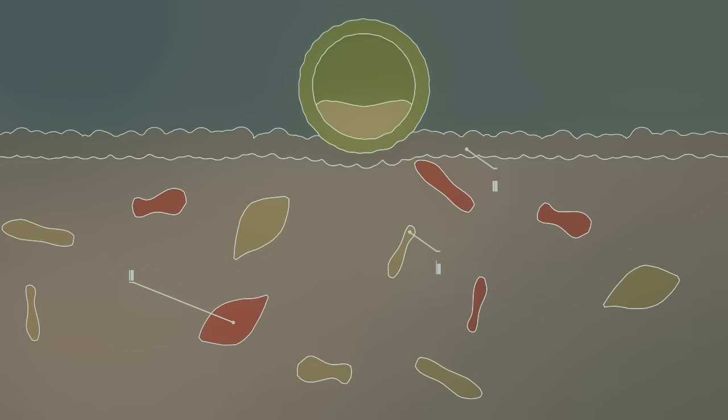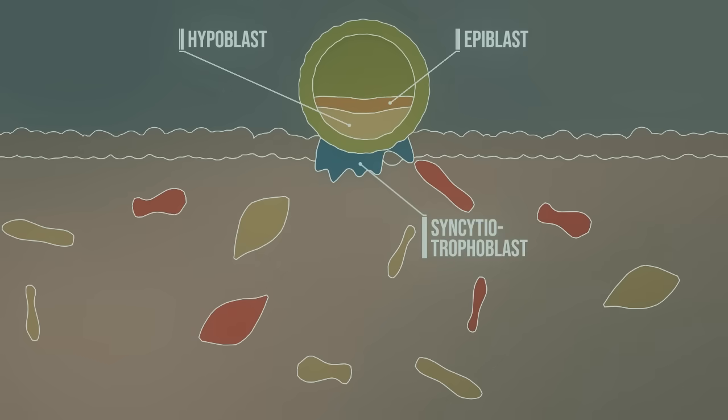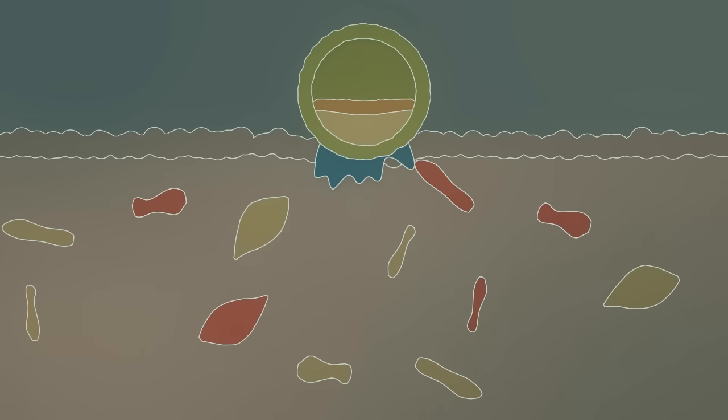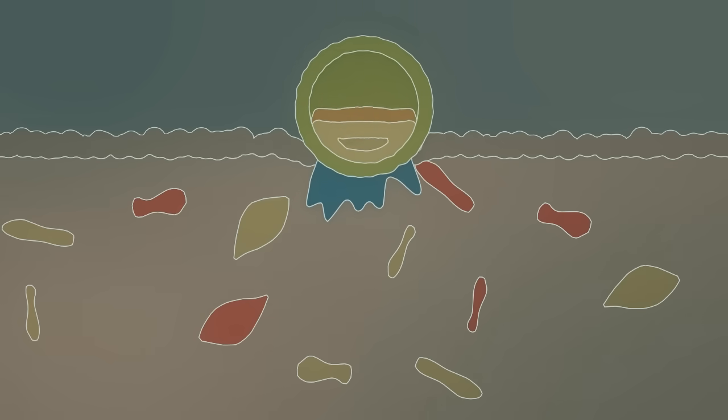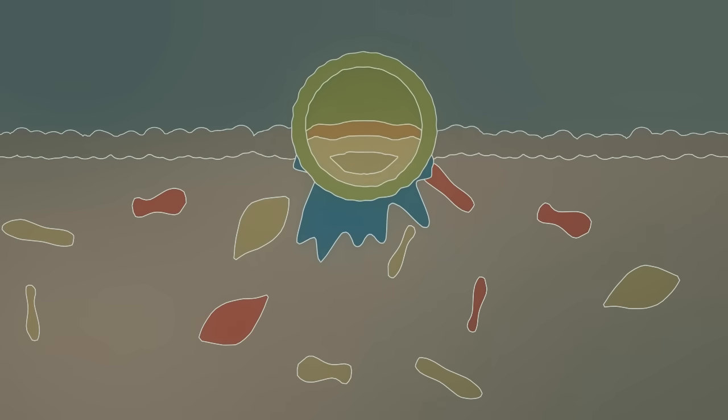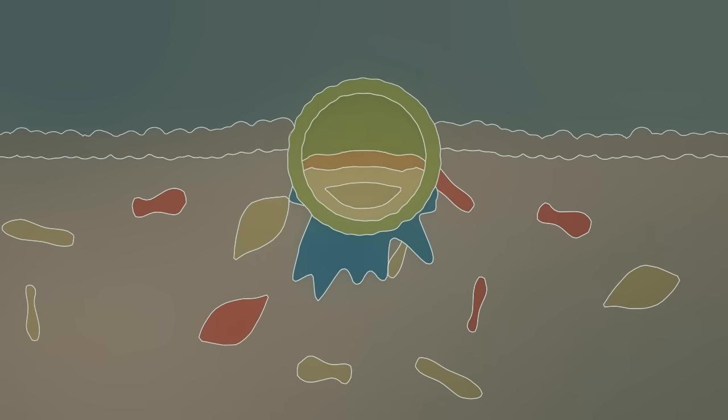A syncytial trophoblast is formed that will nourish the embryo. In addition, hypoblasts and epiblasts arise from the embryoblast. The embryo burrows further into the endometrium, rapidly increasing in cell mass and leaving a wound, which may result in a completely harmless implantation bleeding.